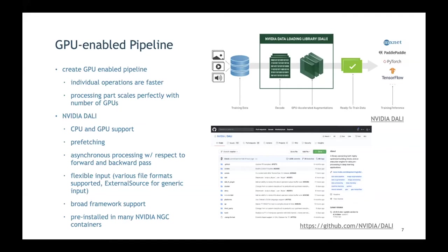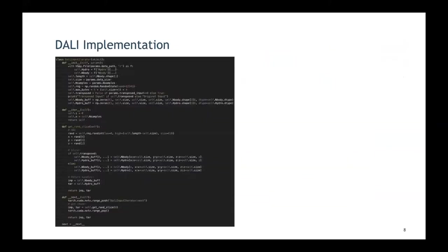DALI is also open source with a GitHub page where you can file feature requests or bug reports. To use it, since there's no built-in reader for this specific data format, you use the external source feature, which allows you to feed arbitrary data into the DALI pipeline. You create an iterator that feeds the pipeline and DALI takes it from there.